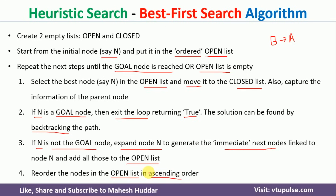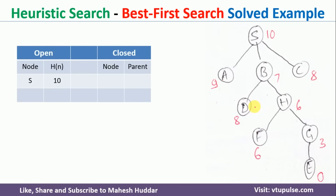These four steps should be repeated unless and until we get the goal node, or there is no node present in the open list. Now we will take one simple example to understand this algorithm. Let us say that the graph is given something like this, where S is the source and E is the goal node.